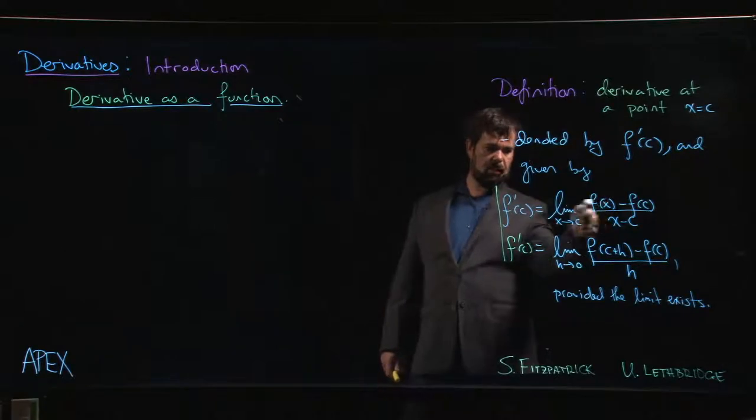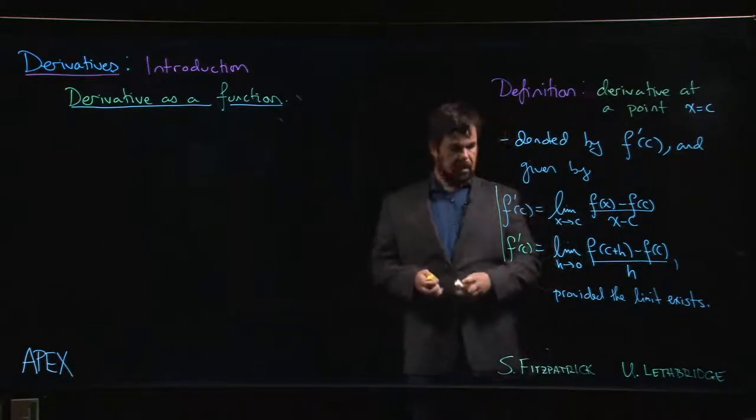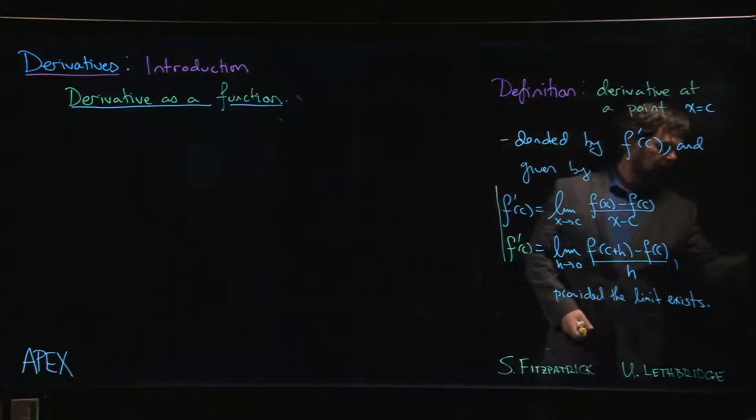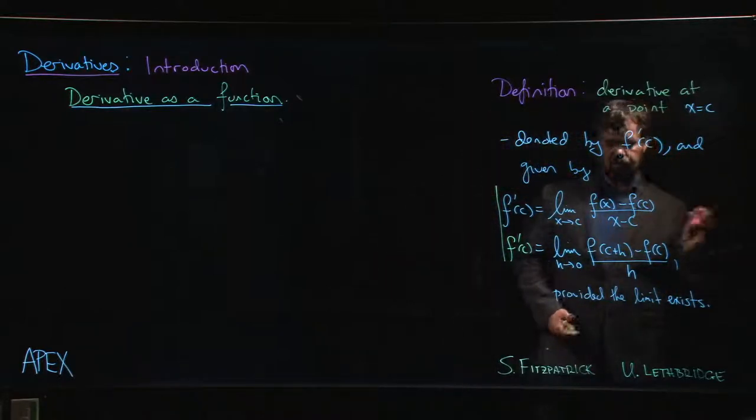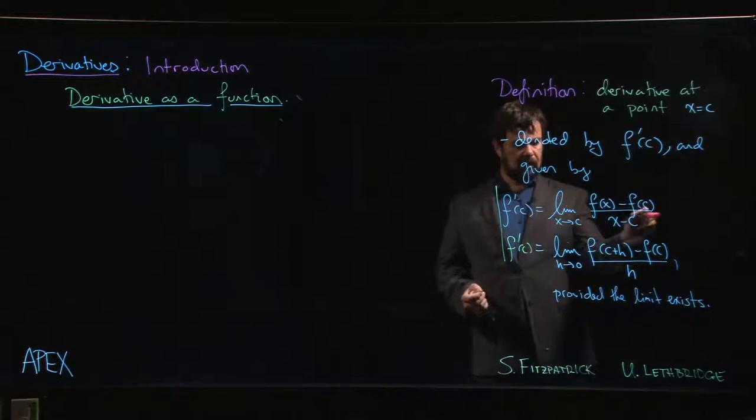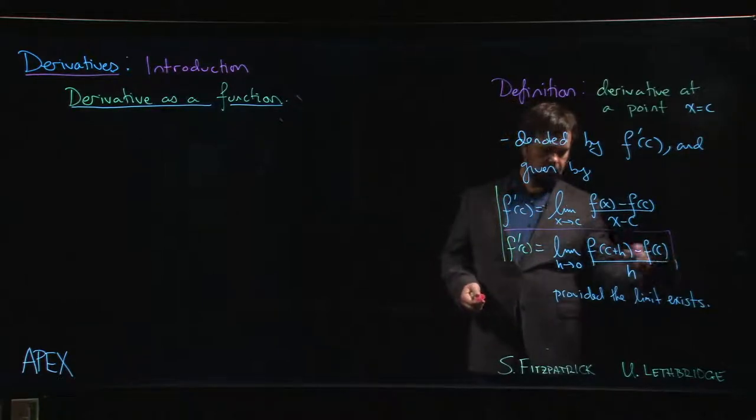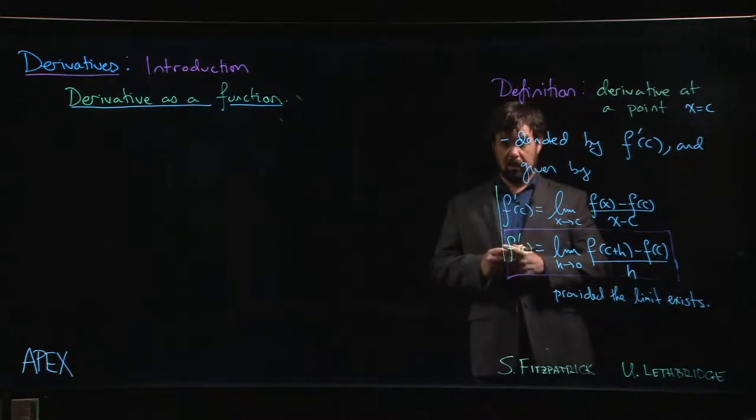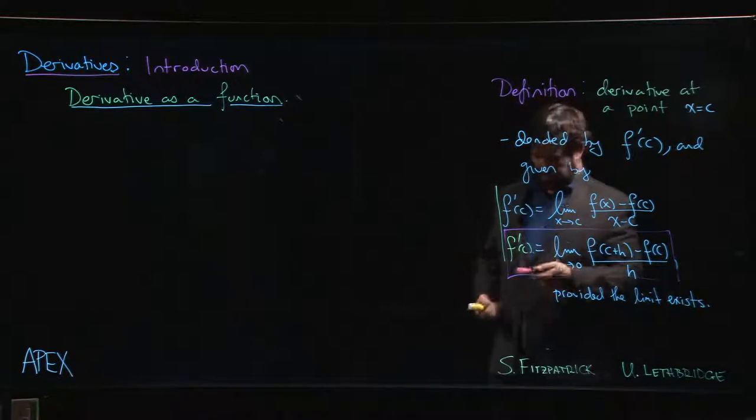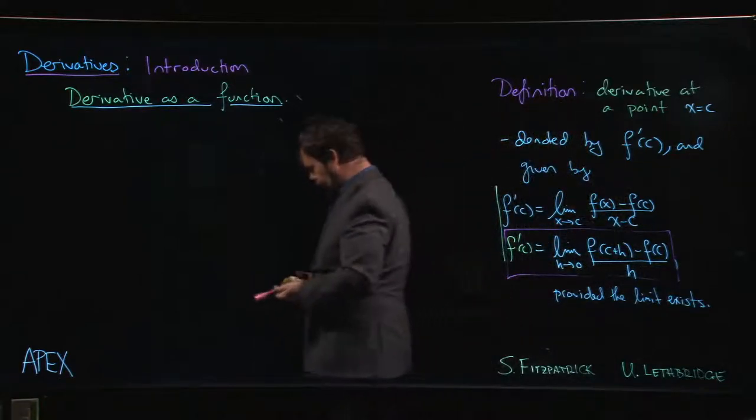Here it's harder to put some dependence because we're already using x as the limit variable. And that's why this first formula, although it's sometimes convenient for calculating slopes, ultimately, when we want to define the derivative as a function, we modify this one.